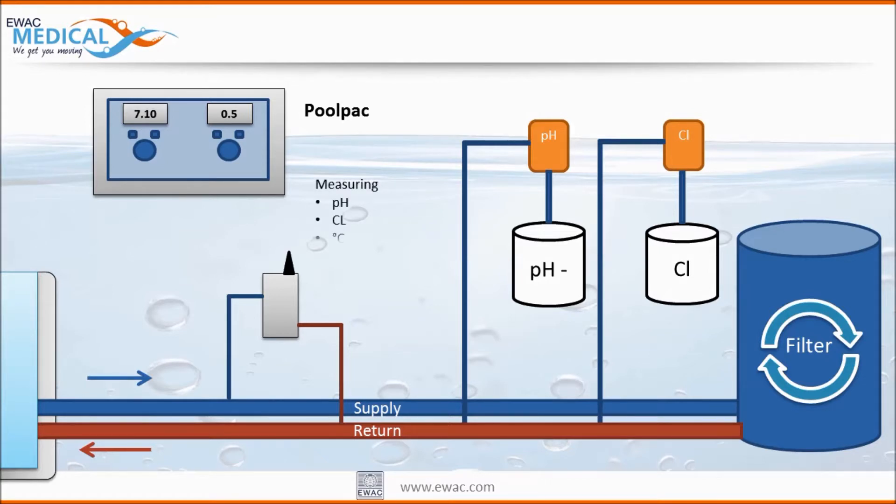The measurement cell measures the pH, the chlorine content of the water, the temperature and the flow, and feeds the signals to the Pool Pack. The Pool Pack then compares the actual situation with its settings and when there is a deviation it sends a signal to the chlorine or pH dosing pump to correct it.